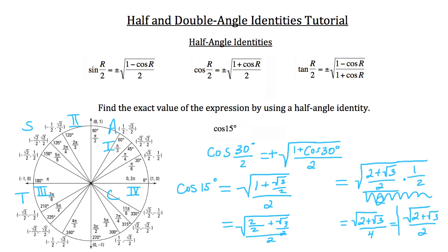So our answer is the square root of (2 plus root 3) over 2. That's a pretty complicated answer, which gives you insight into why 15 degrees doesn't appear on the unit circle — that would be its cosine value, and it's much harder to handle than the simple values you see for 30, 45, and 60 degrees.